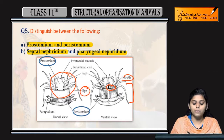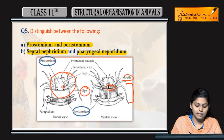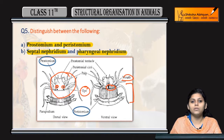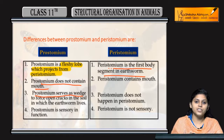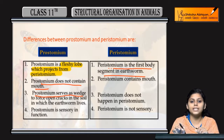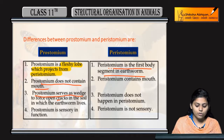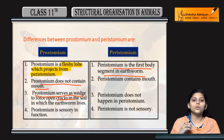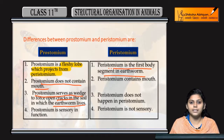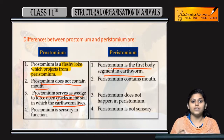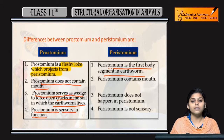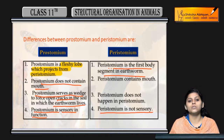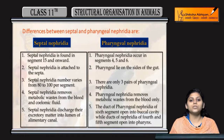Prostomium has eyes present while peristomium does not. Prostomium serves as a wedge, acting as a wedge-like structure, whereas peristomium is a hole-like structure in which the prostomium is placed. Peristomium does not perform this wedging function. Prostomium has a sensory function whereas peristomium does not.